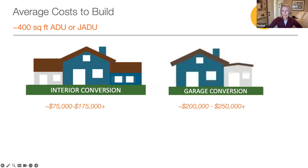Converting existing finished living space — simply repurposing an area of your home that may already include a bathroom and a separate entrance so the unit functions independently — is the easiest and least expensive way to create an ADU or junior unit on your property, perhaps even less than what is being estimated here. But the cost can vary greatly based on the size, complexity, and condition of your home.